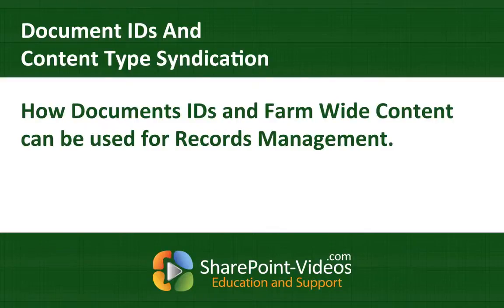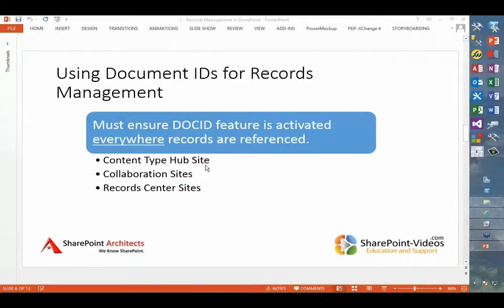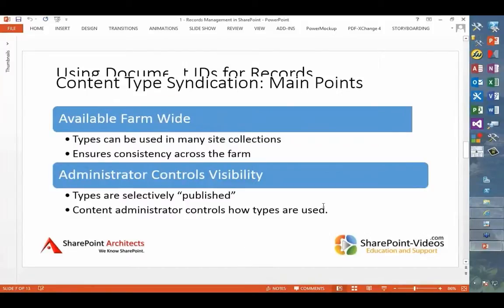Let's talk about how that gets associated with these sites. We haven't seen the content type hub site yet, but that's one place where the document feature really needs to be activated, because that's going to be the content types that drive our records management decisions. With record center sites, the doc ID feature is automatically turned on when we use the record center site template. The document center site is turned on automatically, but for our collaboration sites, it's not, so we want to make sure that it's turned on for our collaboration sites.